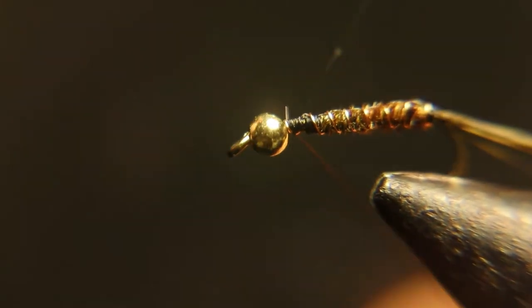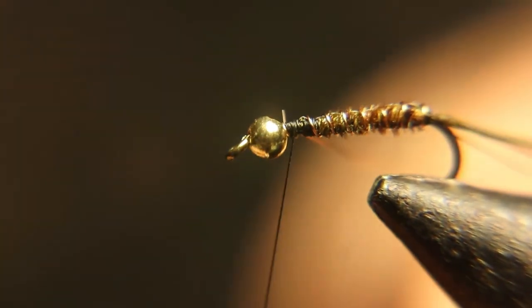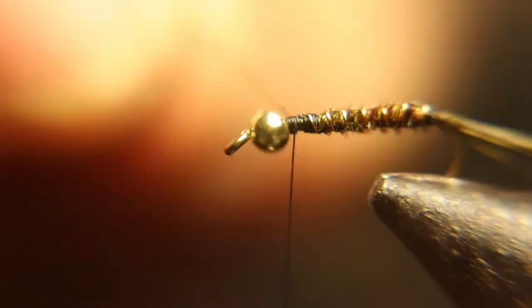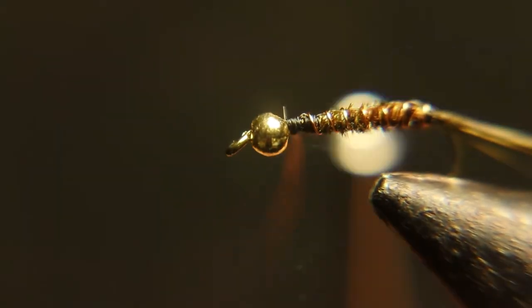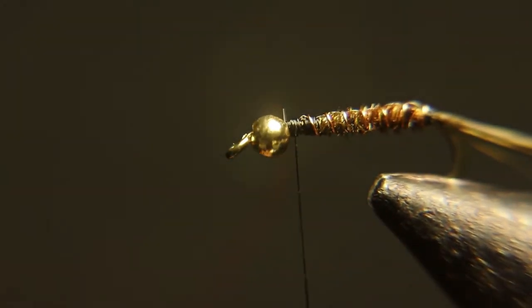Okay, now you're going to put some thread wraps in front of the wire and back of the wire to secure it down really good. Then helicopter it off till it breaks off. Finish tying it down.